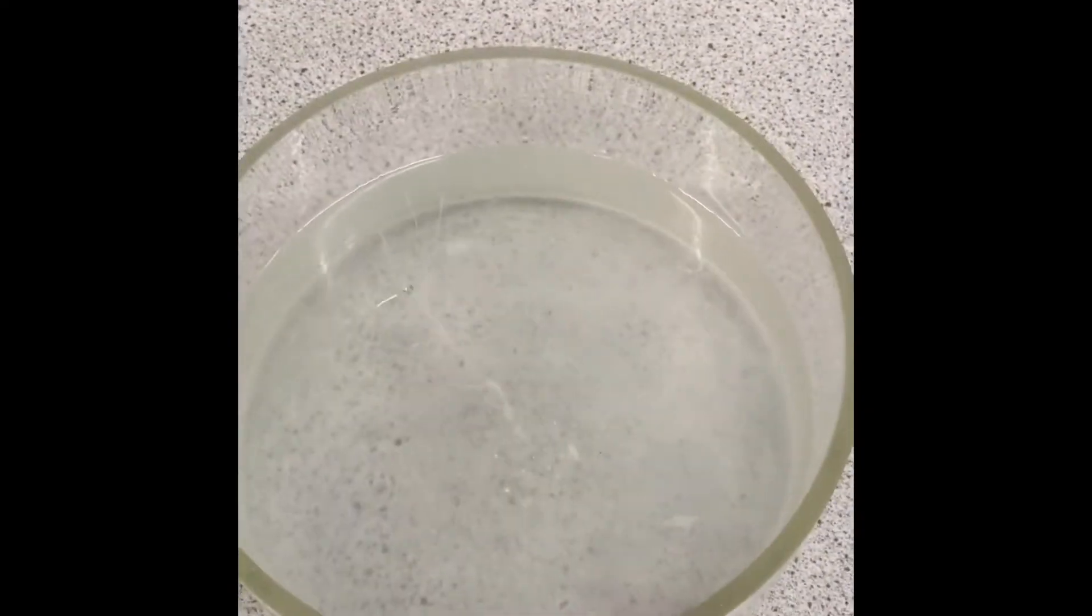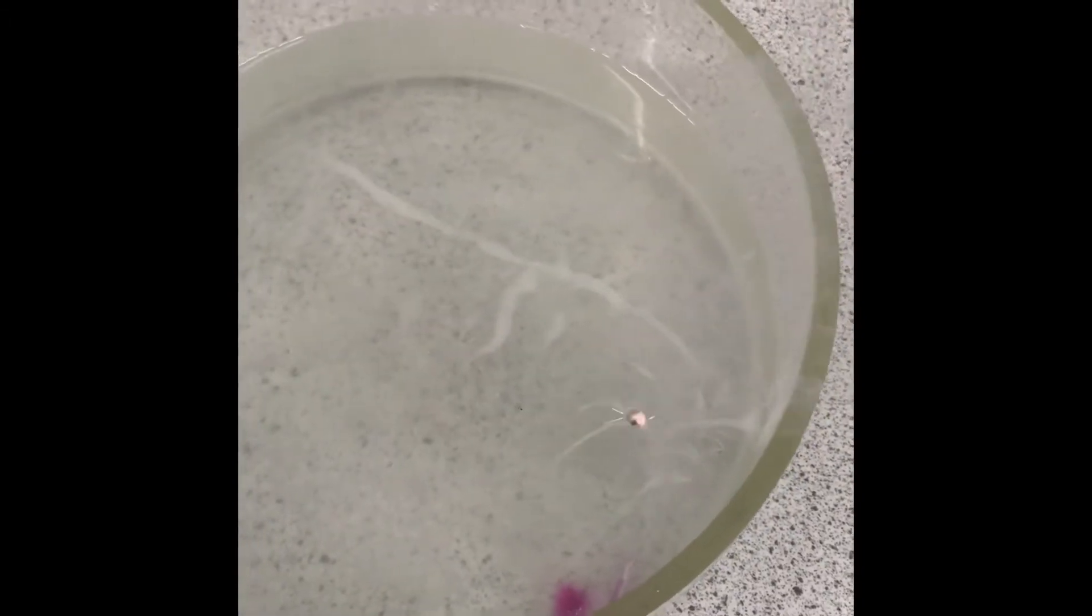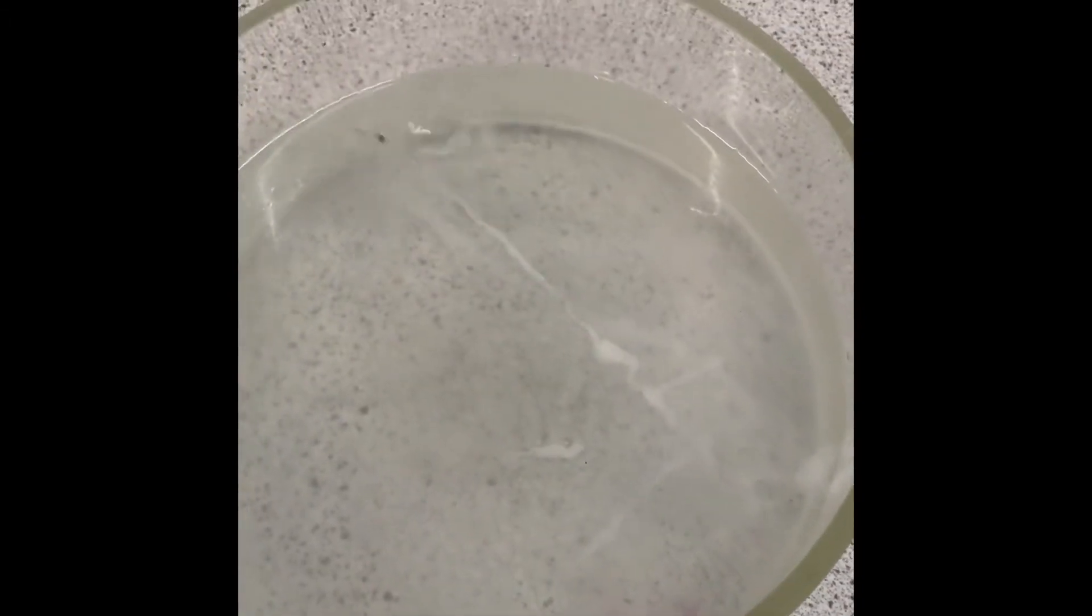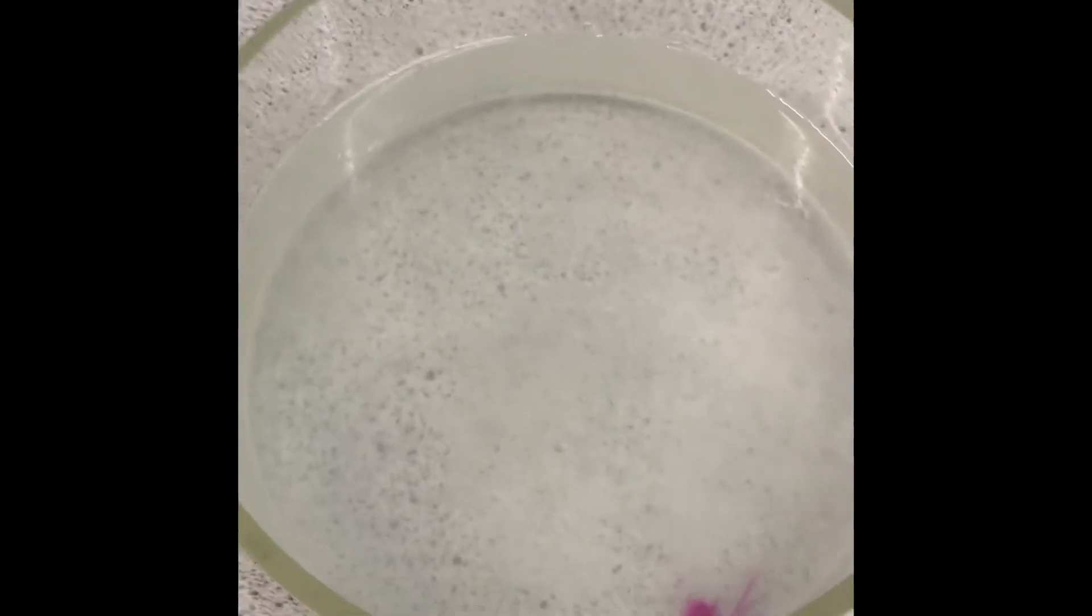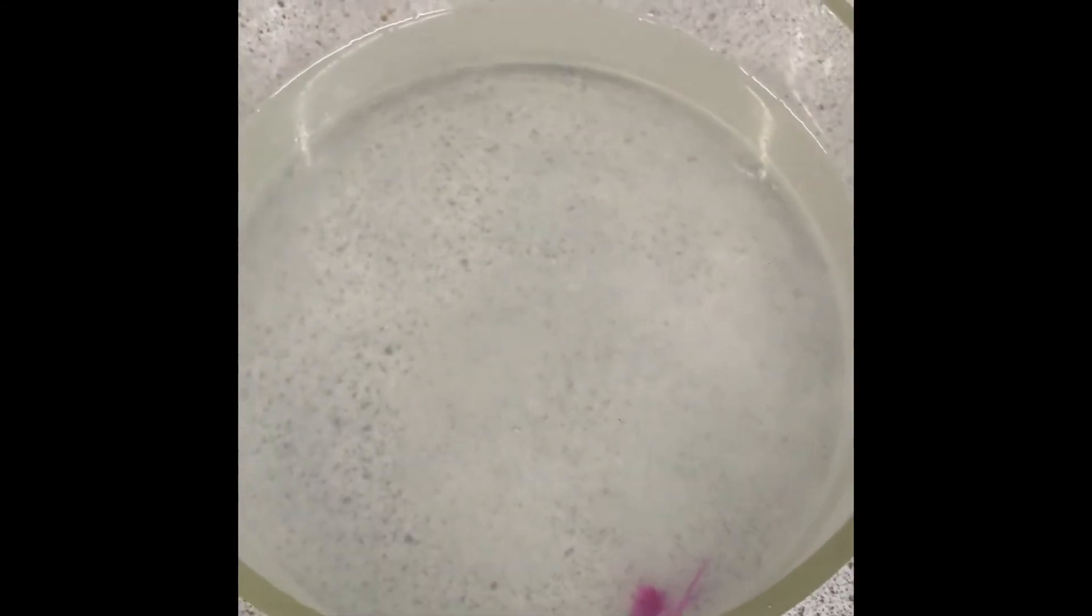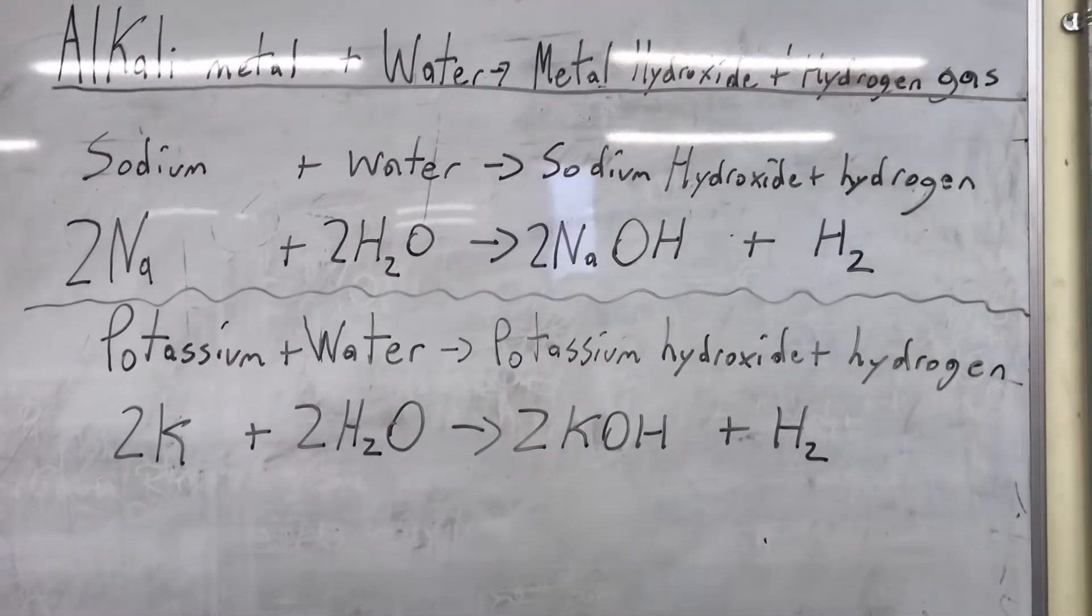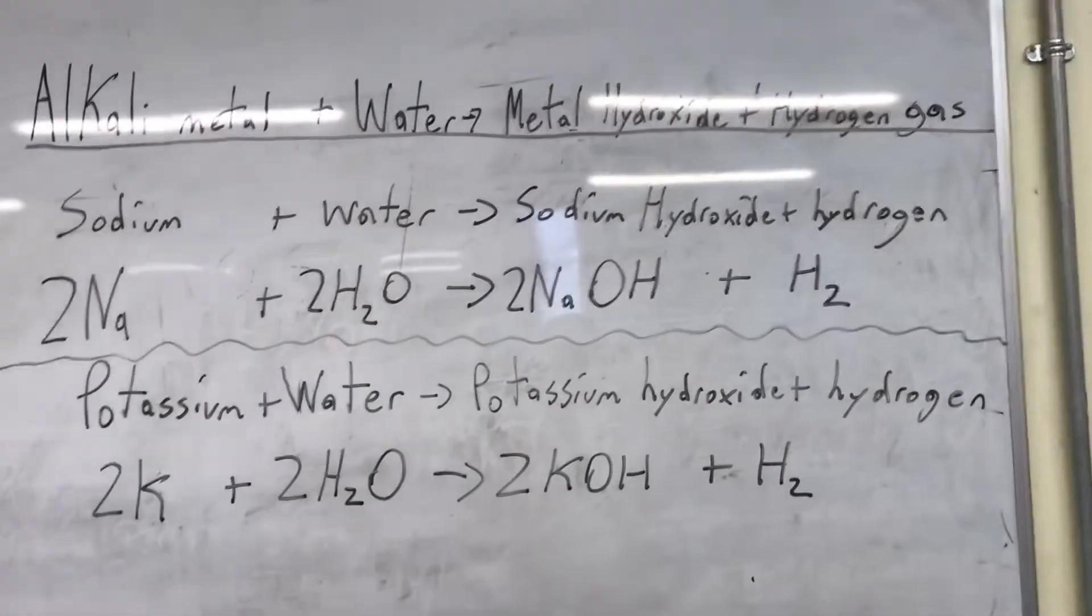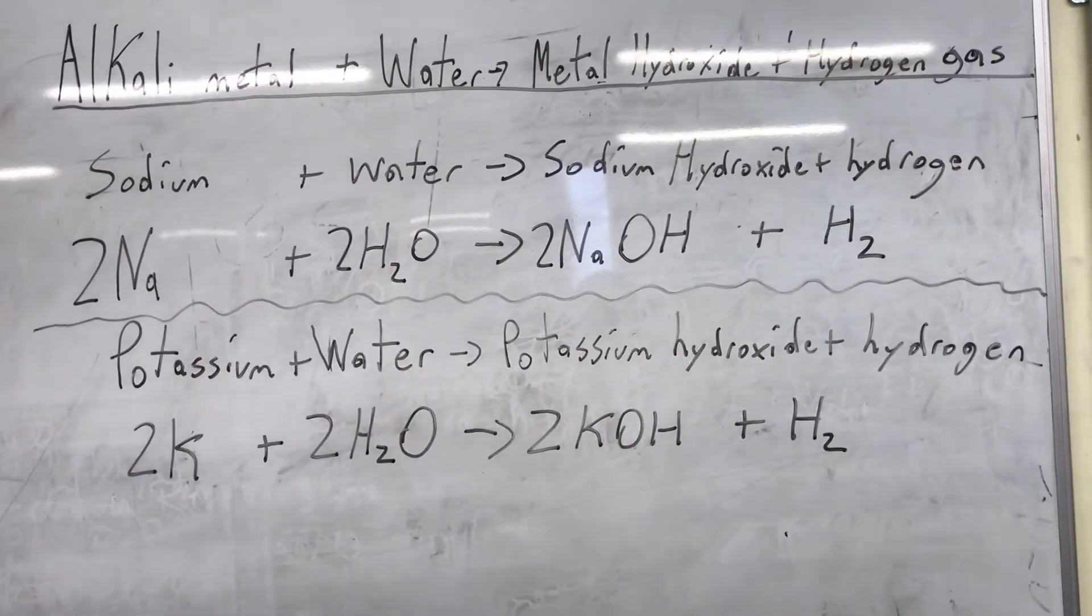Now, putting potassium into the water. As you can see, it makes a lilac-colored flame and reacts very quickly. It also produces hydrogen gas, just like the other alkali metals. Potassium was so reactive with the water that it caused the hydrogen gas produced to catch fire and give a lilac-colored flame.